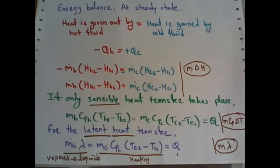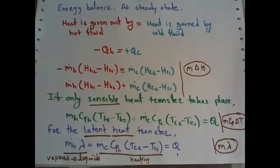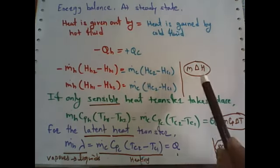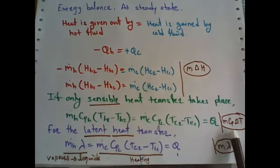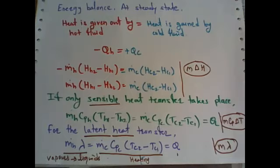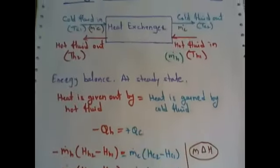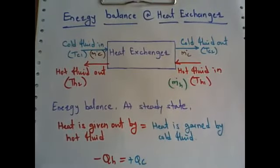This is the simple energy balance equation where we can use the sensible heat concept, the latent heat concept, or the enthalpy change concept. The basic formulas for the rate of heat transfer are: Q = ṁΔH, Q = ṁCpΔT, and Q = ṁλ. Depending on the condition, we select the appropriate equation.